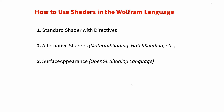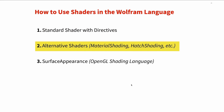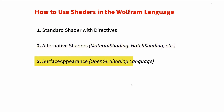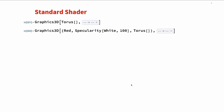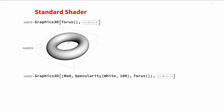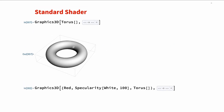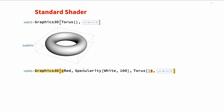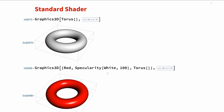Let's see how they're used in the Wolfram language. We have the standard shader with directives. We have alternative shaders, like material shading. And then we have the surface appearance, which is a directive that uses the OpenGL shading language to make custom shaders. The standard shader renders a torus with a nice matte material. This shader does take parameters — for example, you can specify directives like face form being a color, and a specularity. So in this case, we'll have a red shiny torus. However, in these cases, we're not actually changing the shader itself, just the parameterization.